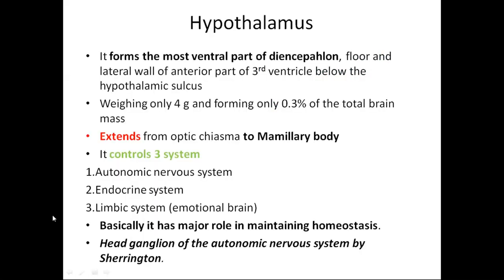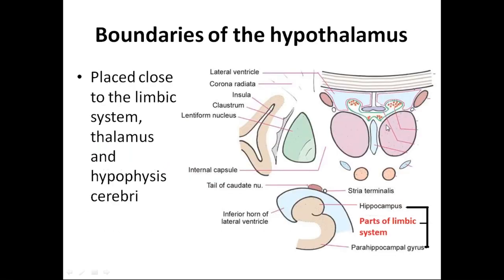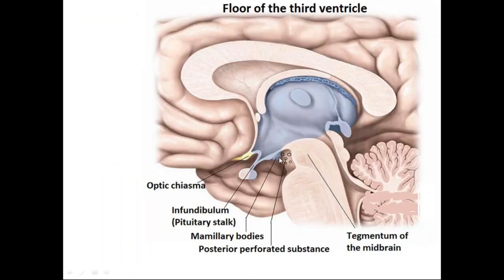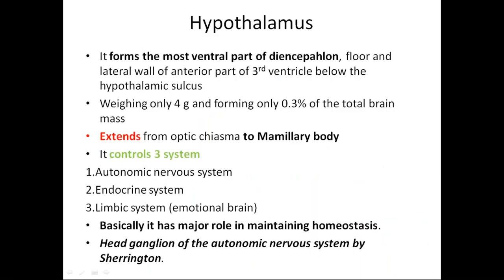The hypothalamus forms the ventral part of the diencephalon. It also forms the floor and lateral wall of the anterior part of the third ventricle below the hypothalamic sulcus. It weighs about 4 grams, which is only about 0.3% of total brain mass. It extends from the optic chiasma to the mammillary body. It controls mainly three systems: the autonomic nervous system, endocrine system, and limbic system. It plays a major role in maintaining homeostasis and is called the head ganglion of the autonomic nervous system.